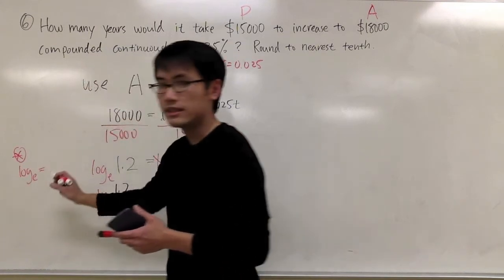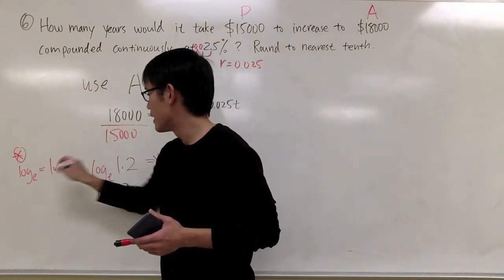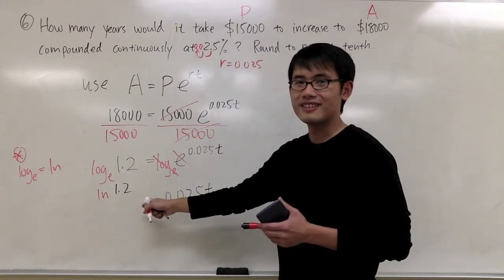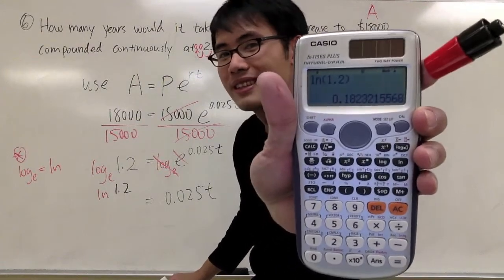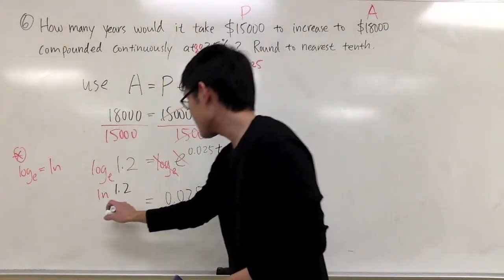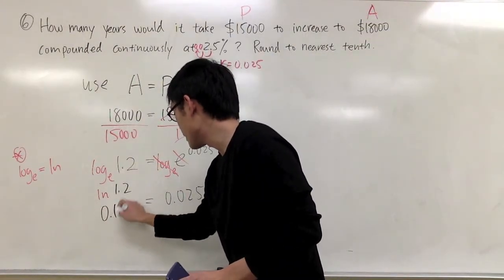Log base e is the same as LN, and that's what we are doing right here. And the answer for this part right here is 0.182.